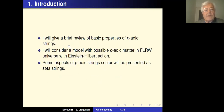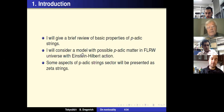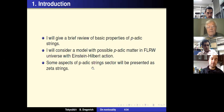I will give a brief review of basic properties of p-adic strings, then consider a model with possible p-adic matter in a Friedmann–Lemaître–Robertson–Walker universe with Einstein–Hilbert gravity, and then present some aspects of the p-adic string sector, which I call zeta strings.